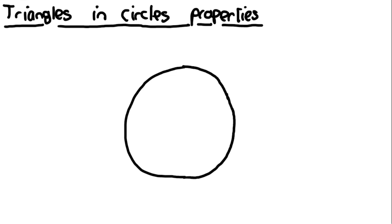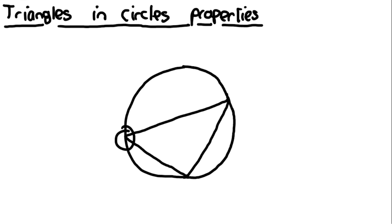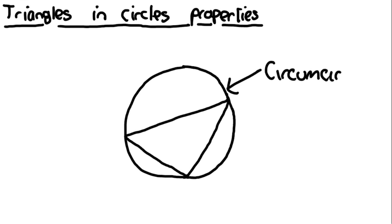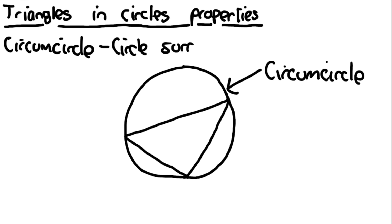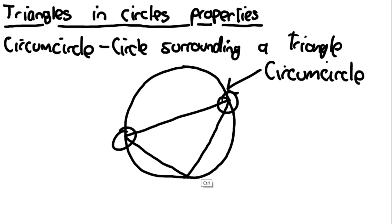This video is on triangles that are inside circles. Before starting, a couple of terms need to be defined. If we have a triangle inside a circle such that all of the corners or vertices of the triangle touch the circumference of the circle, that circle is known as the circumcircle of the triangle. The circumcircle means it is a circle surrounding a triangle, and all corners must be touching the circle.